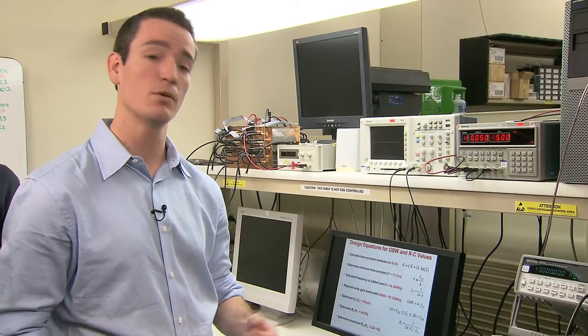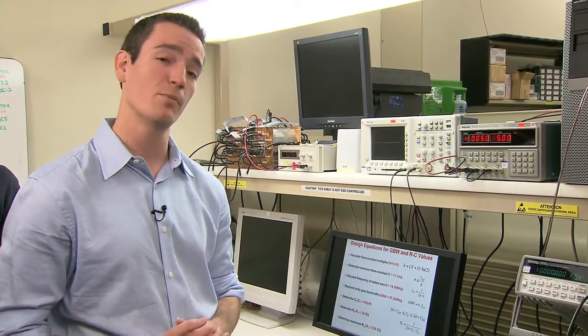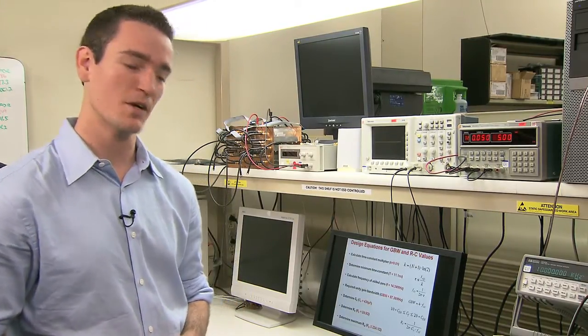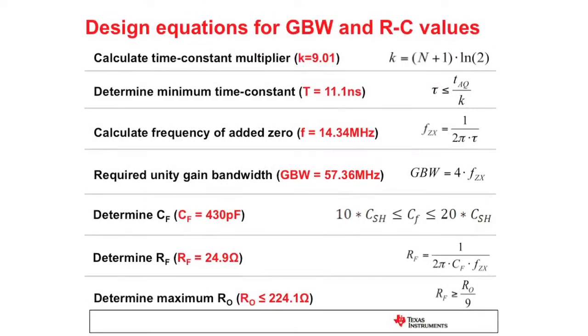Now that we have those parameters, we can put them into our design equations to obtain the correct values for unity gain bandwidth needed from the op amp, the output referred impedance, and the correct RC filter values. First, we calculate the time constant multiplier from the number of bits — we get 9.01. We then use that to calculate our time constant, and from that we calculate the frequency of the zero added to our system, giving us the unity gain bandwidth required — which is 57 megahertz.